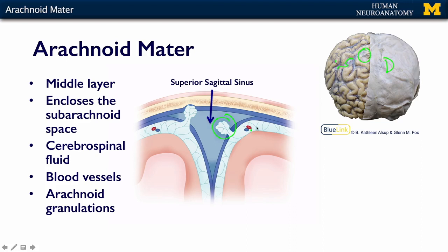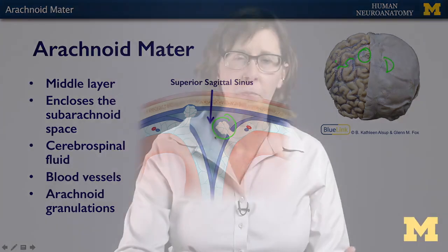This is the subarachnoid space, and the arachnoid granulations represent areas of the arachnoid that push into the dural sinus. This allows cerebrospinal fluid to go from that subarachnoid space back into venous circulation and then drain.